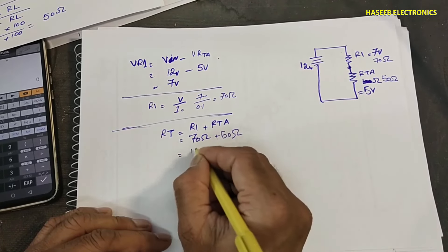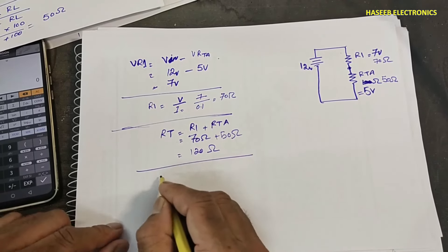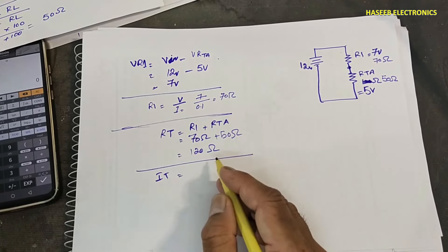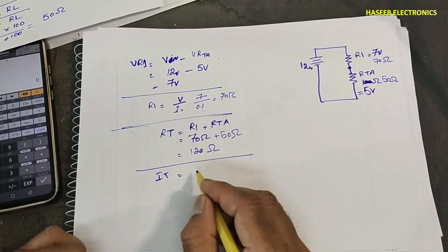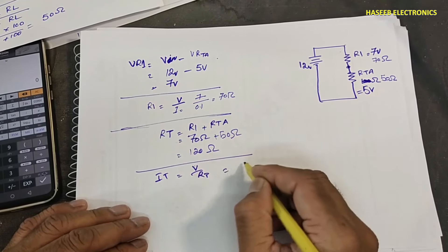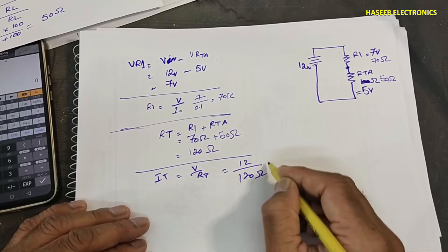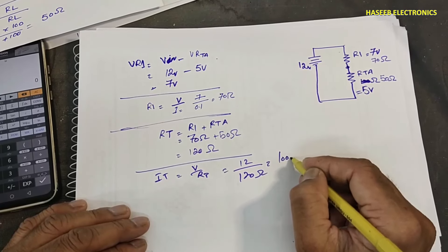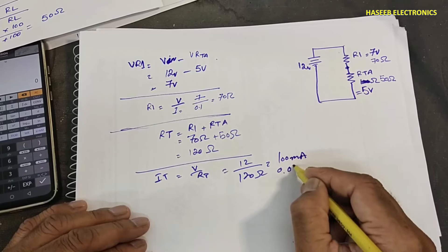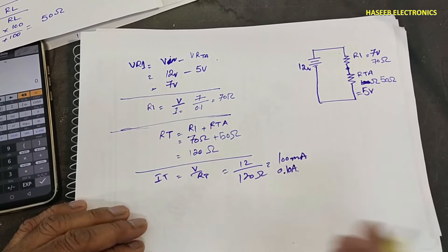Total current IT equals V over RT equals 12 divided by 120 equals 100 milliampere — 0.1 ampere. This is a cross-check confirming our calculation is correct.